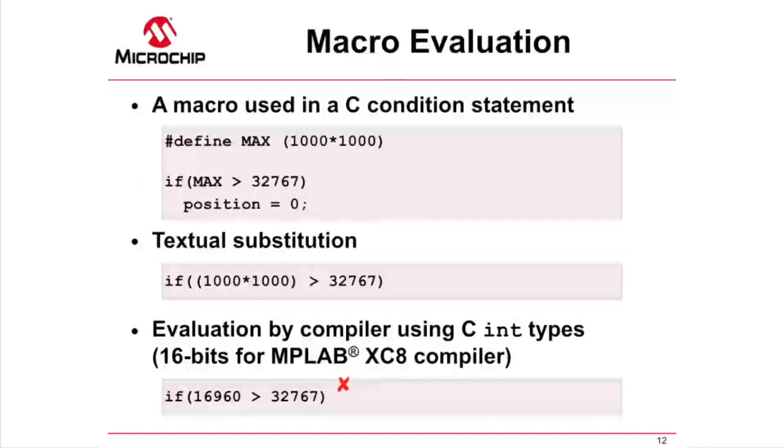When the preprocessor expands a macro, the replacement is purely a string of characters. So in this example, MAX, in the IF statement's controlling expression, is replaced with the characters open bracket 1 0 0 0 star 1 0 0 0 close bracket. The preprocessor does not evaluate this expression, nor is there any concept of types at this point. This is just a string. Later in the compilation process, the compiler will see the expanded expression, and only then will the characters be tokenized, associated with numerical values and operators, and take on C types, as dictated by the usual C language rules.